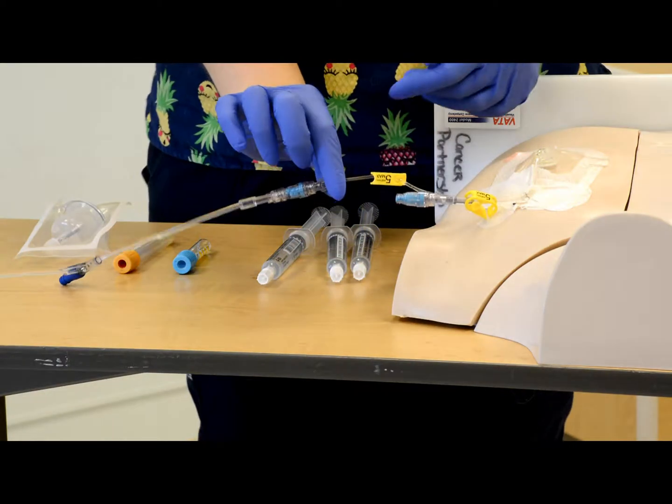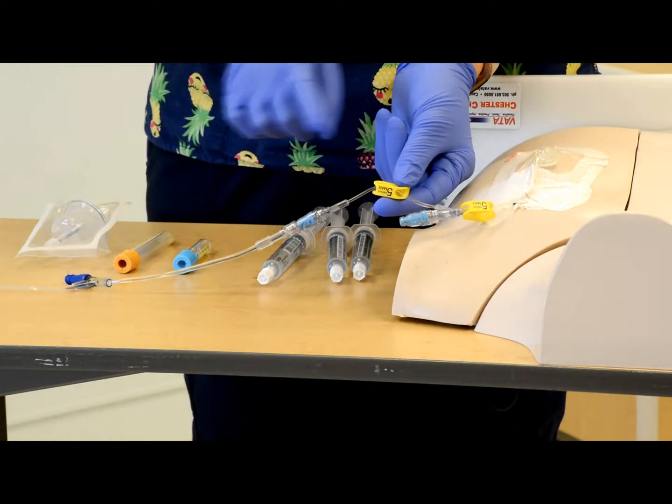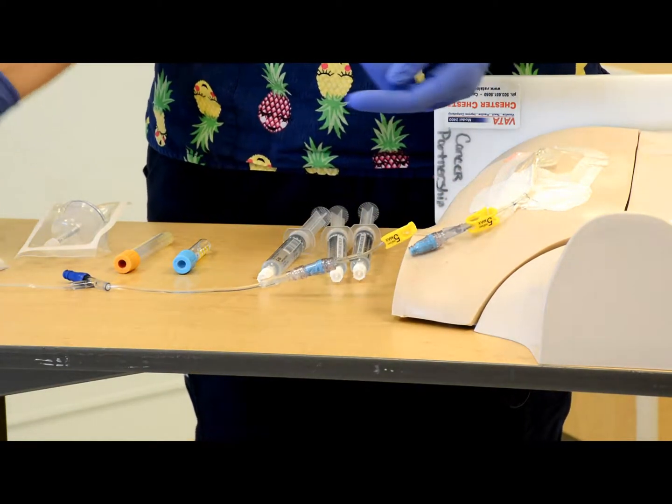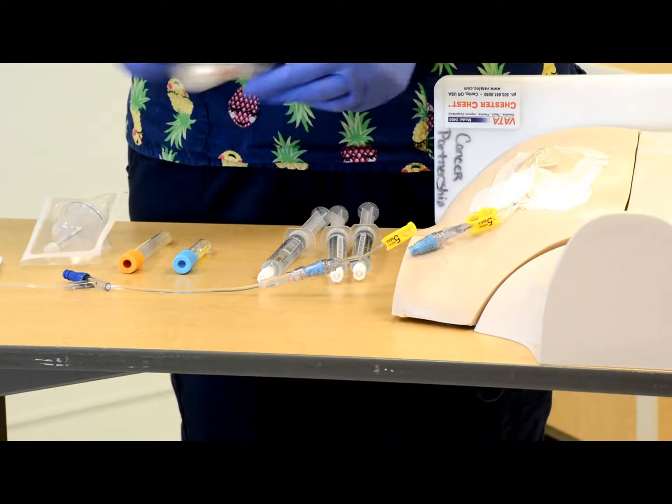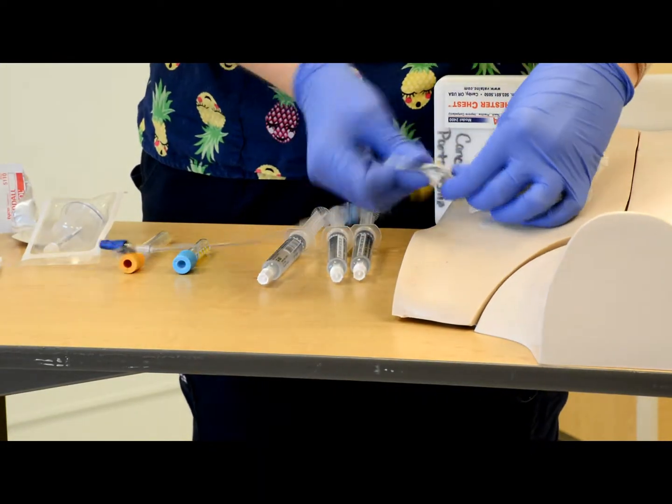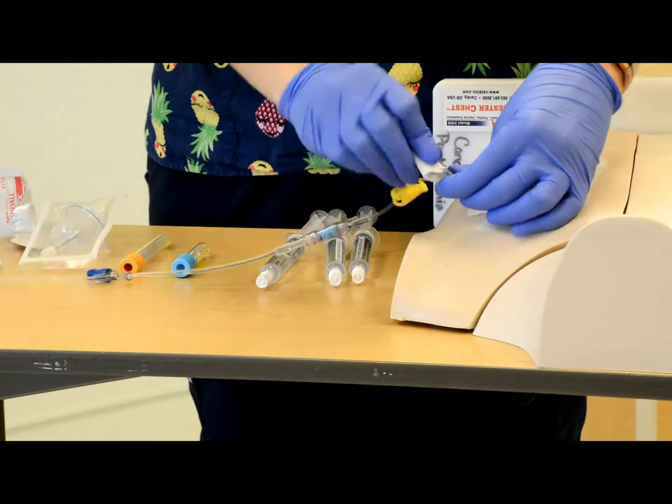Now make sure that you have your tubing clamped to your continuous infusion and your pump is stopped. Take your alcohol swab, and you're going to vigorously scrub the hub for 10 to 15 seconds.